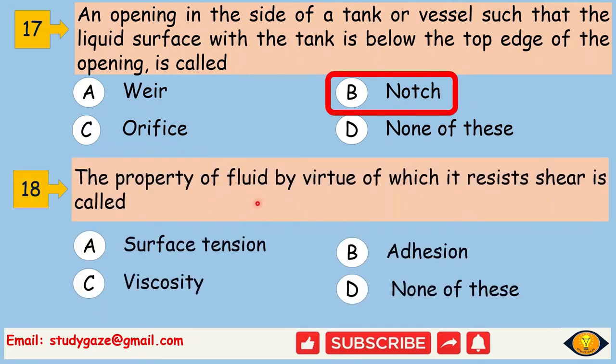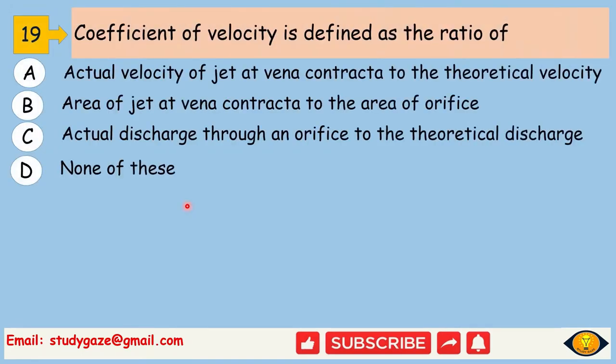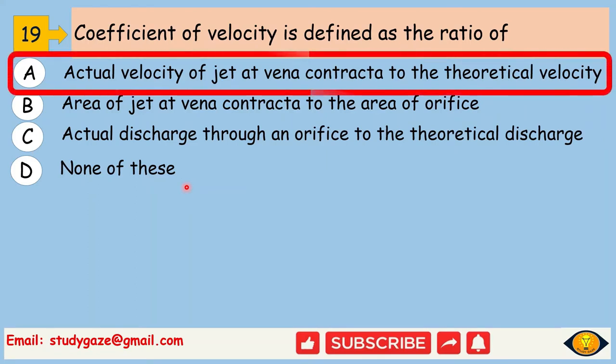The property of fluid by virtue of which it resists shear is called viscosity. Coefficient of velocity is defined as the ratio of actual velocity of jet at vena contracta to the theoretical velocity.